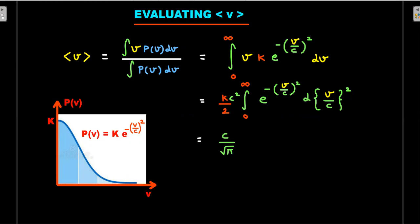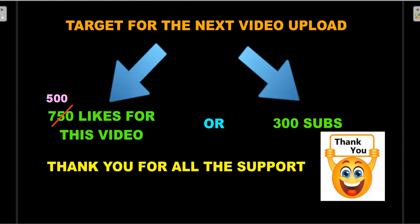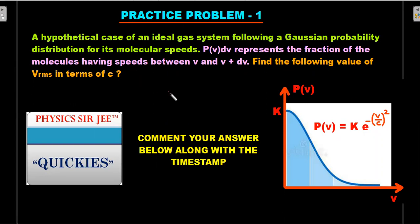Now for the six practice problems. Practice problem one: using the same Gaussian distribution, calculate v_rms in terms of c. Comment your answer with the timestamp and the method you used to integrate. This involves evaluating v² times the distribution function — when you do v² into this particular function it's a key integration. This is a straightforward continuation of the main problem.